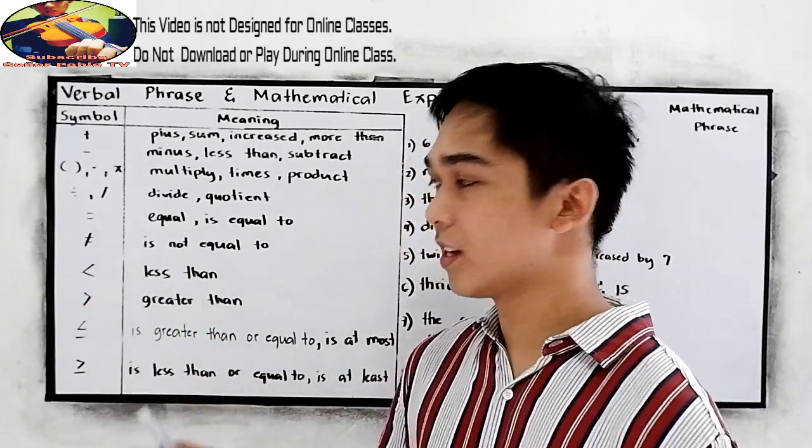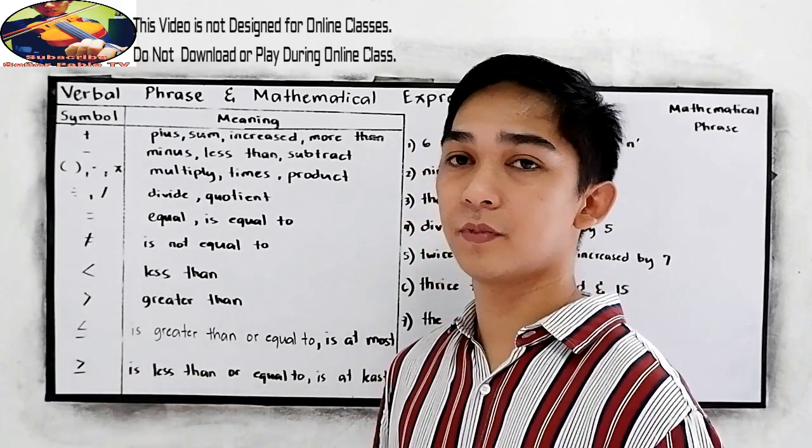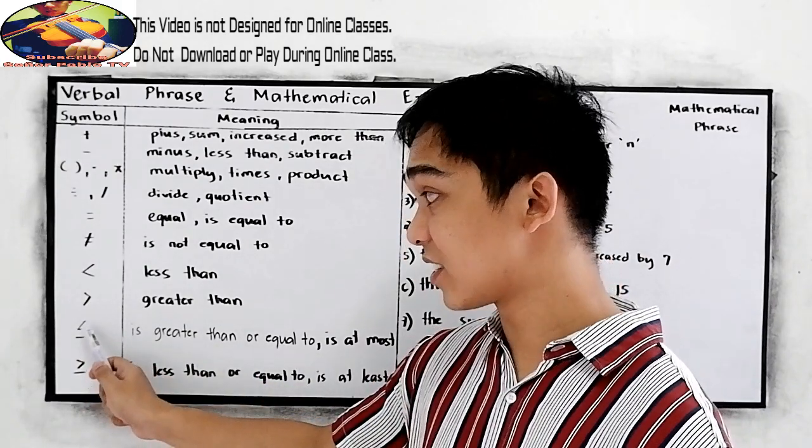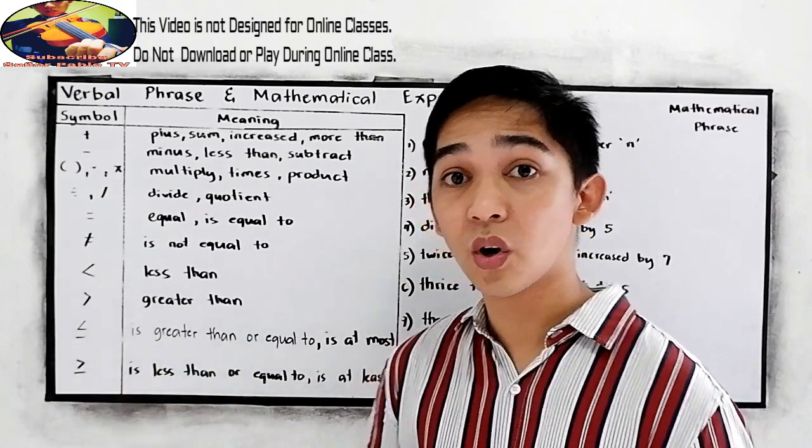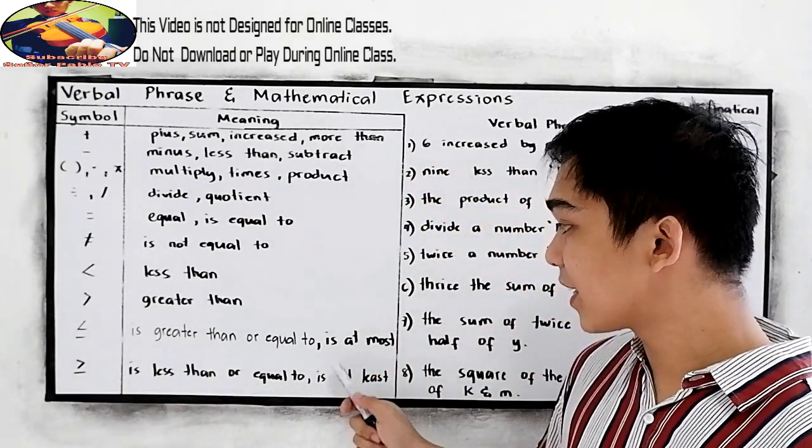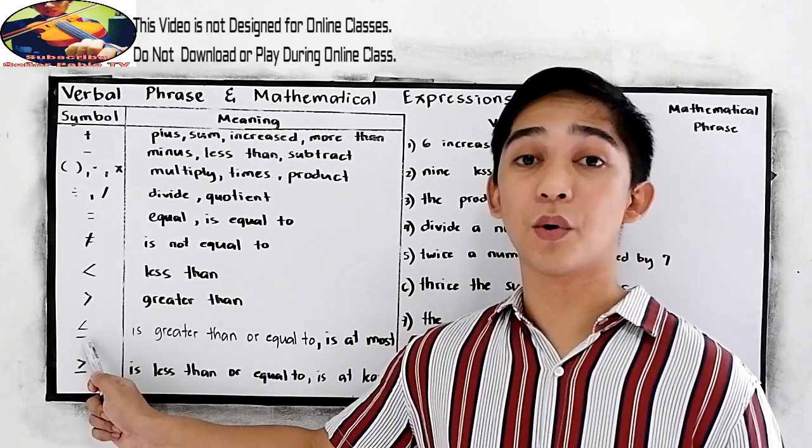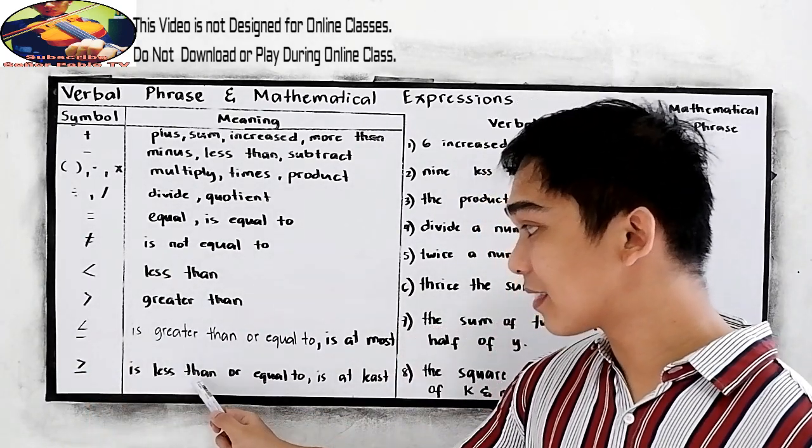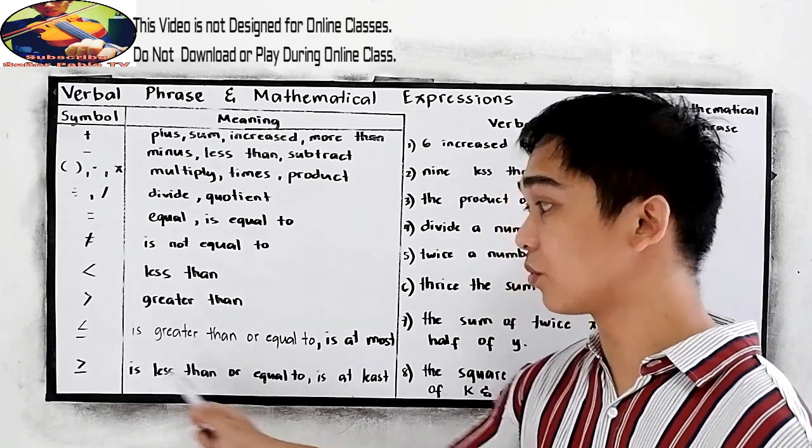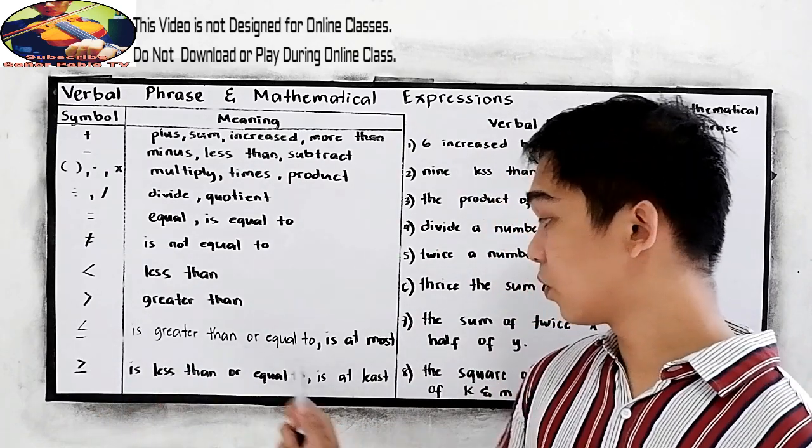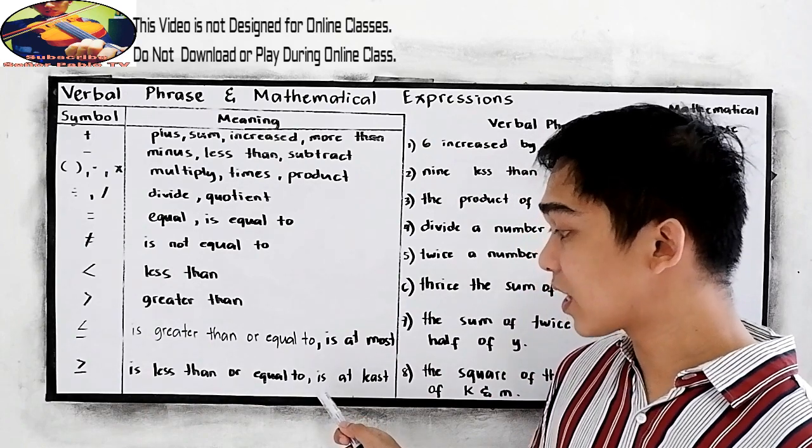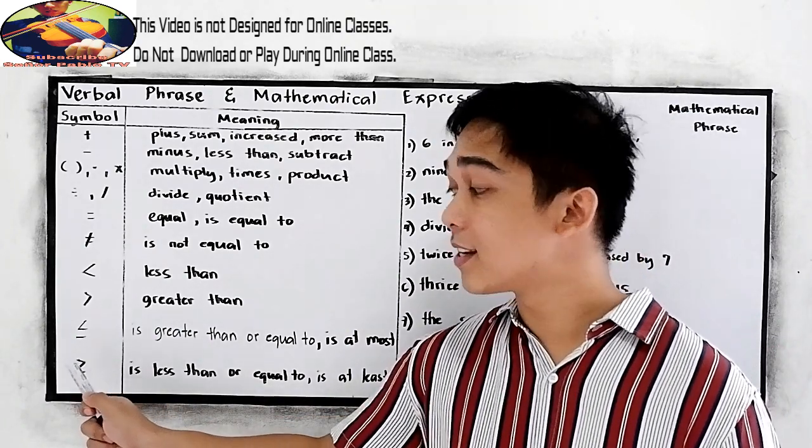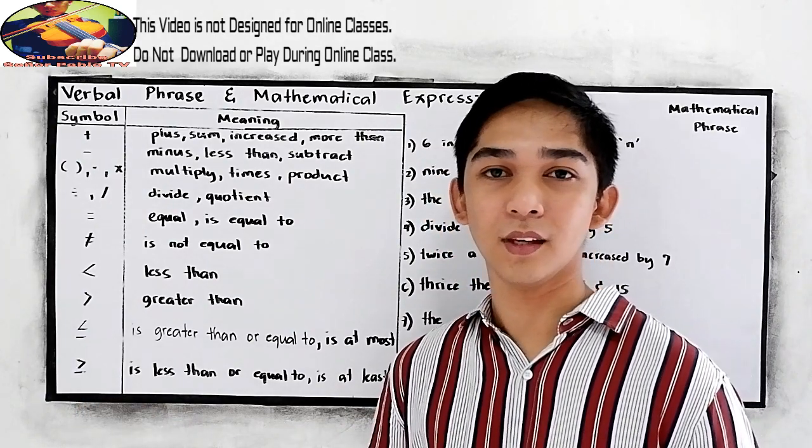Less than, greater than, is greater than or equal to. If you are going to encounter is at most, we are going to use this symbol. Is less than or equal to, we are going to use that symbol. And if you will encounter is at least, we are going to use this symbol.